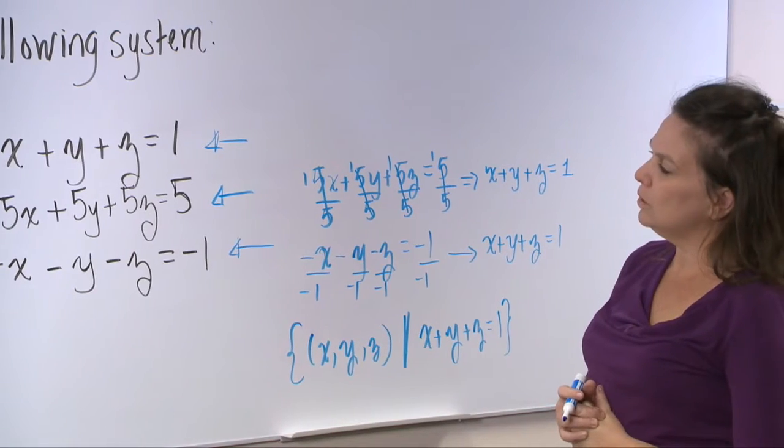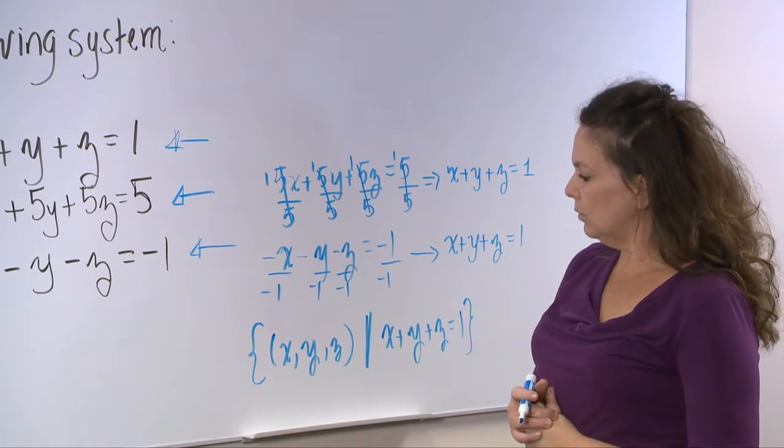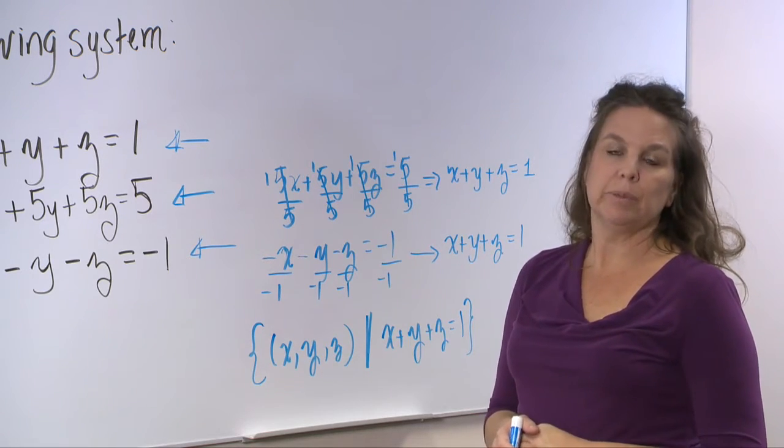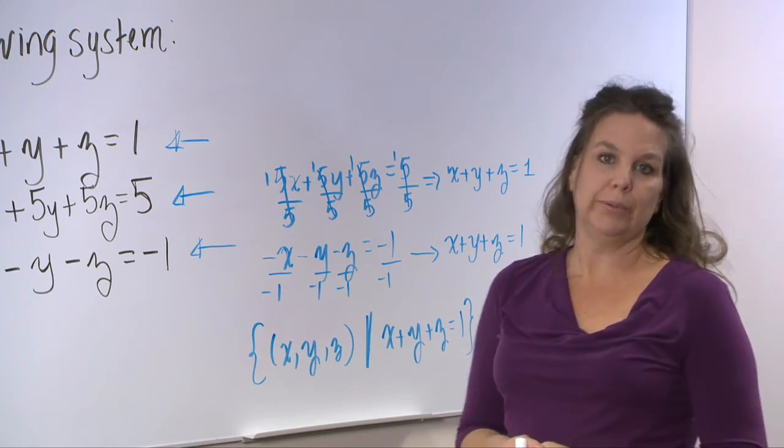So the solution set for the system given is the set of all ordered triples, x, y, z, such that x plus y plus z is equal to 1.